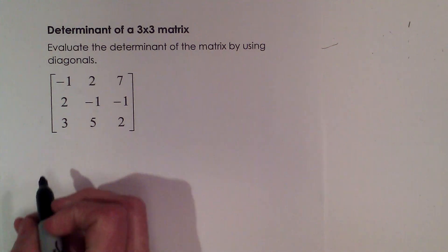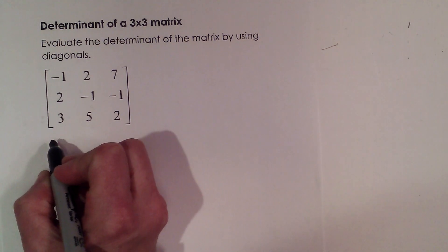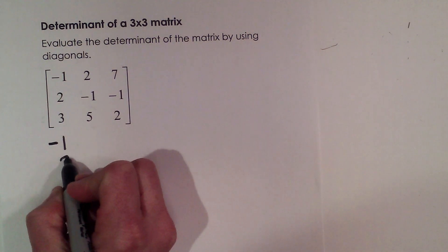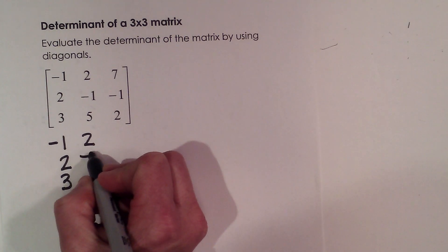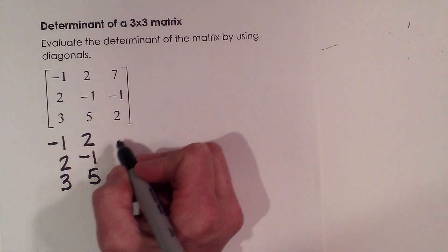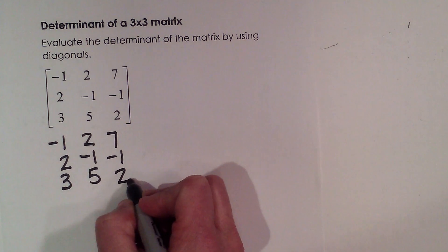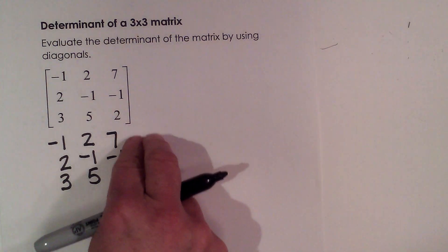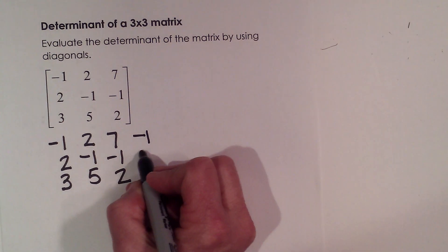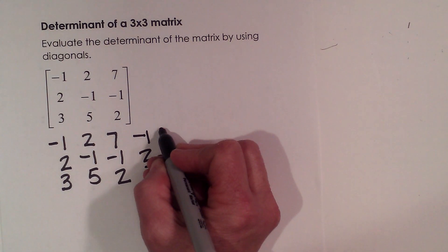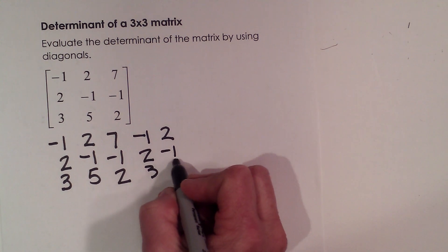So let's bring all that down. So here's my first column, negative 1, 2, 3. My second column is 2, negative 1, 5. And my third column is 7, negative 1, 2. Now I'm going to take these first two columns and rewrite them at the back. So I'm going to write negative 1, 2, 3. And then 2, negative 1, 5.